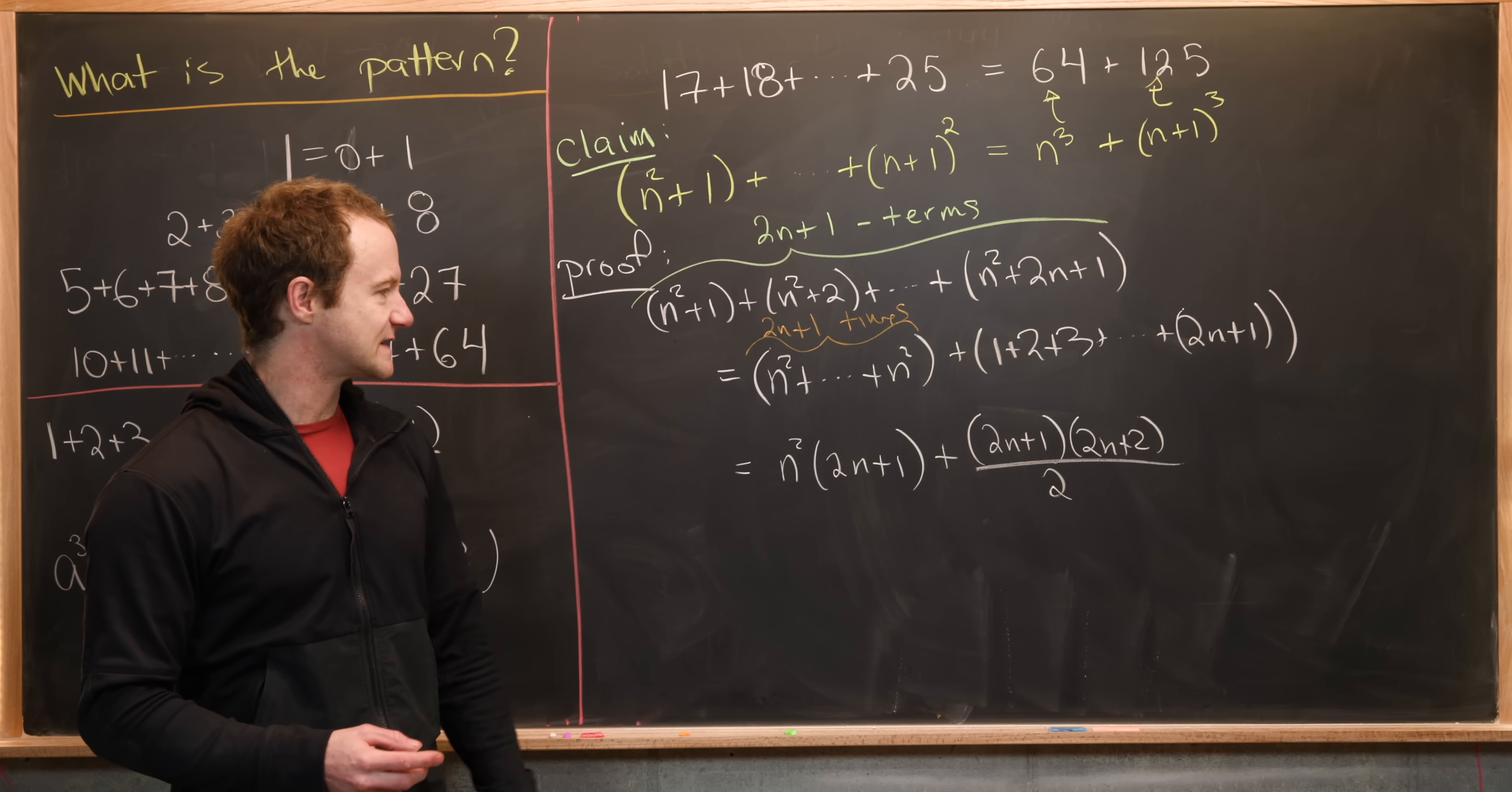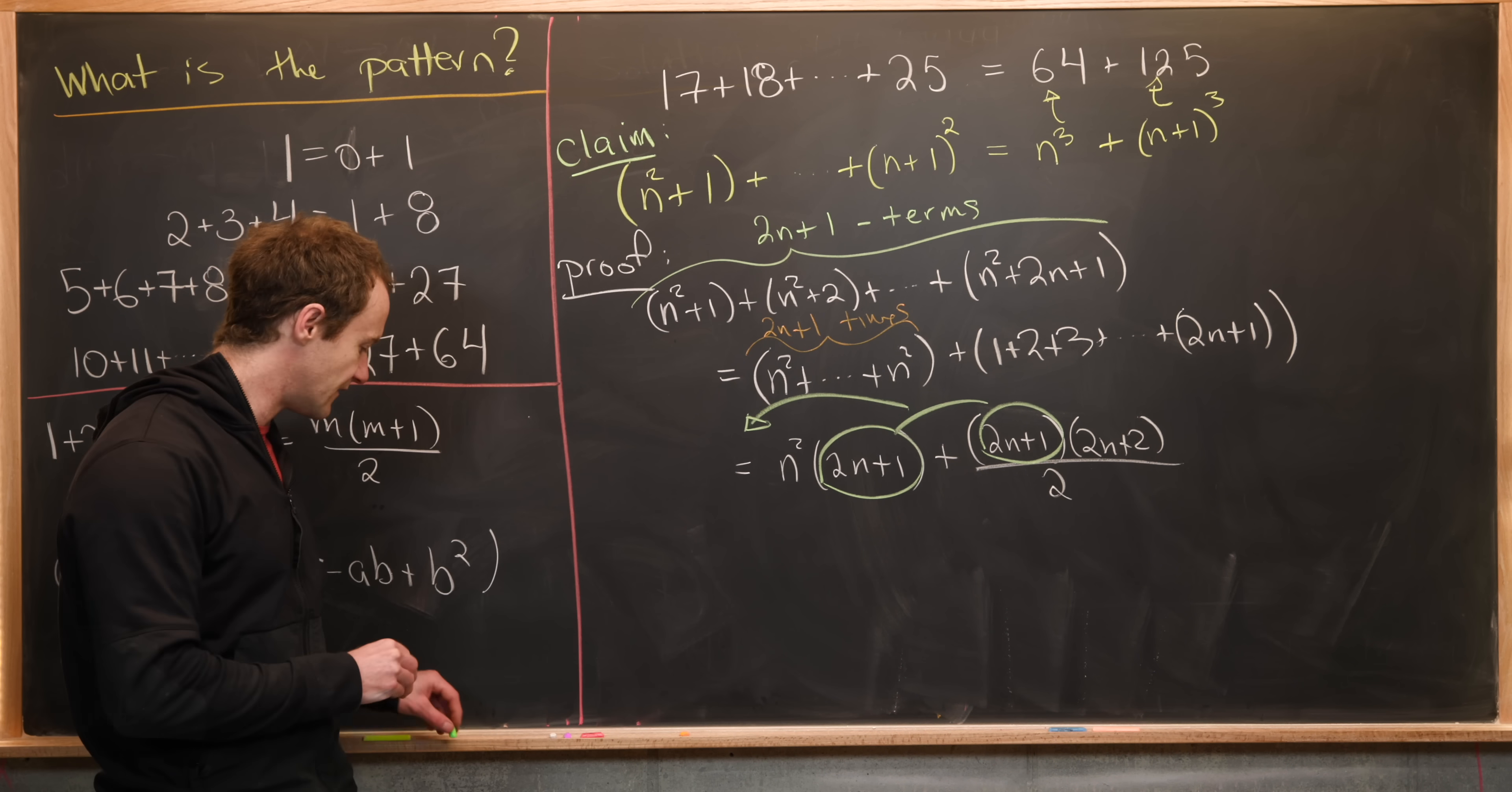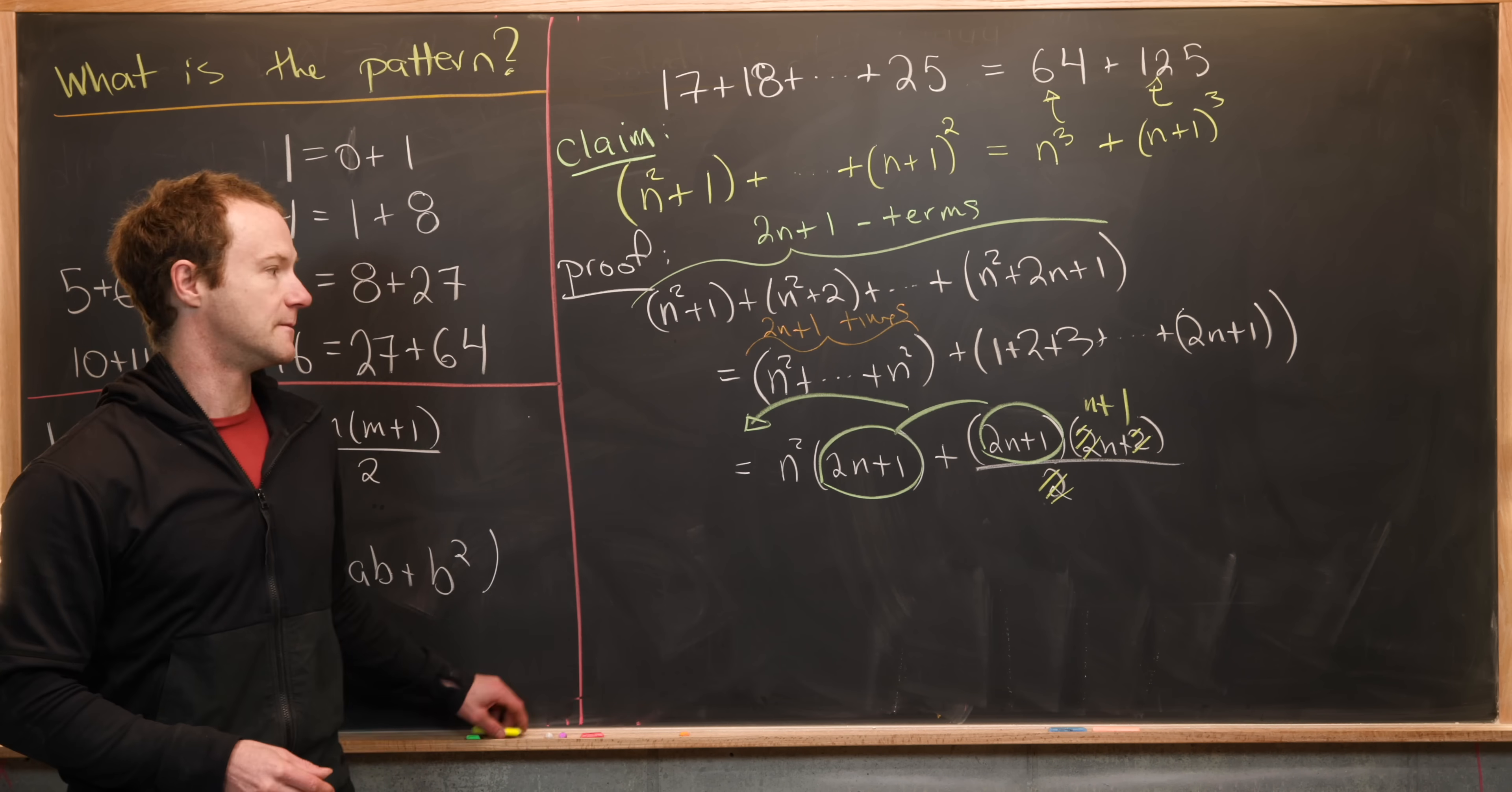Okay, now we can simplify this a little bit. Notice that we can factor a two n plus one out of this entire thing. So let's maybe join those together and we'll factor it out. And furthermore, we can do a simplification by dividing by two, that'll cancel this two in the denominator. And these two twos in the numerator leaving us with n plus one. Nice.